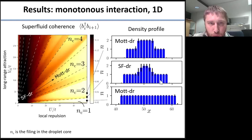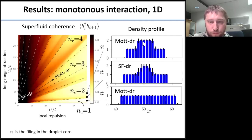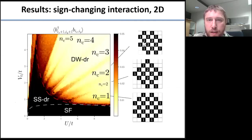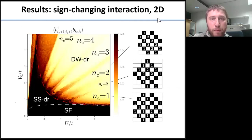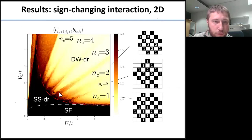Going from one droplet to another, the occupation number in the core of the droplet changes by one. For the case of the sign-changing interaction, shown here for two dimensions, we analogously observe a supersolid droplet and density-wave droplets.